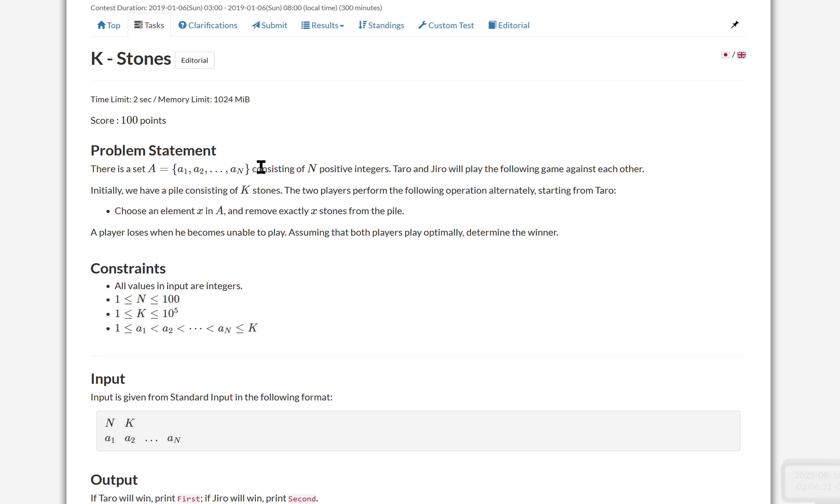So how does somebody lose? What do you mean when you can't play? What that means is you cannot remove exactly K stones from that pile. So that essentially means you lose when the pile has less than the minimum of A stones. So let's keep that.